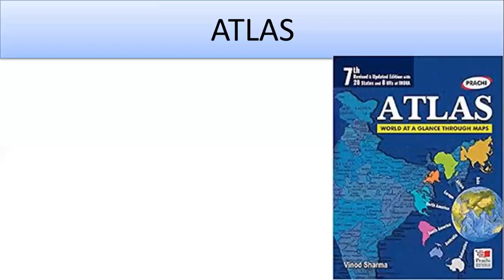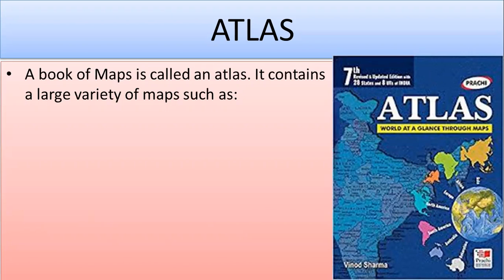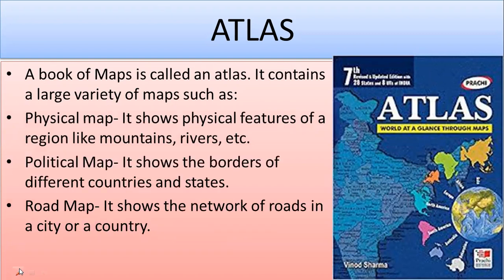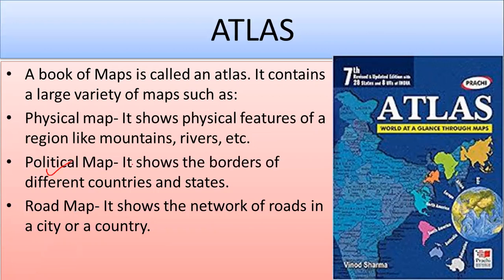Now let's talk about Atlas. A book of maps is called an Atlas. It contains a large variety of maps such as physical maps that show physical features of a region like mountains and rivers, political maps that show the borders of different countries and states, road maps that show the network of roads in a city or country, and other maps that depict the network of railways and airways.